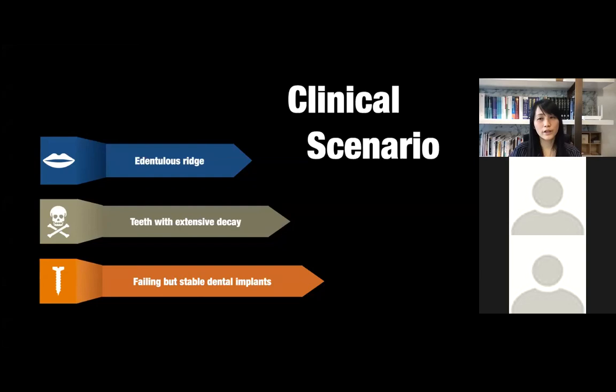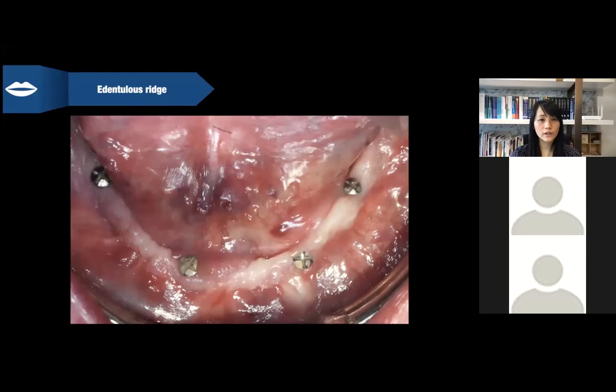Let's move forward to see several different clinical scenarios and how we solve the problems. We'll go through from the fully edentulous patient to the patient with teeth with extensive decay, and also patients with failing dental implants who also need full-mouth reconstruction. Starting from the edentulous case: to place bone screws, a surgeon has to anticipate where the future implants are. You have to imagine how the teeth are going to be set up and try to make sure your bone screws are not in the way of your future implants.